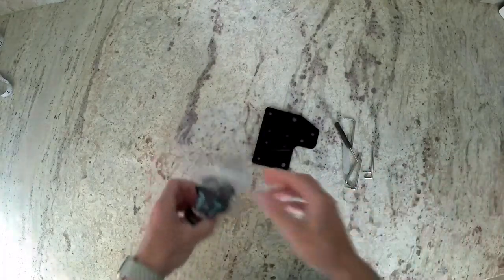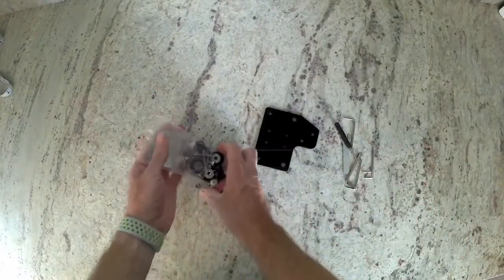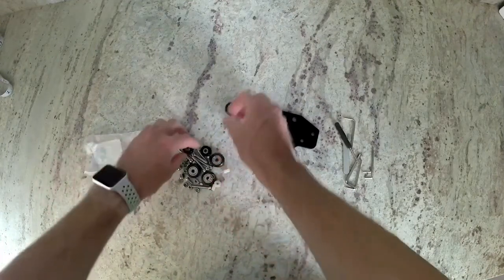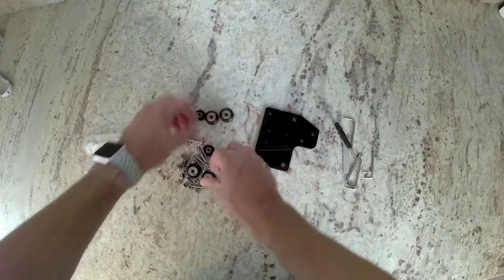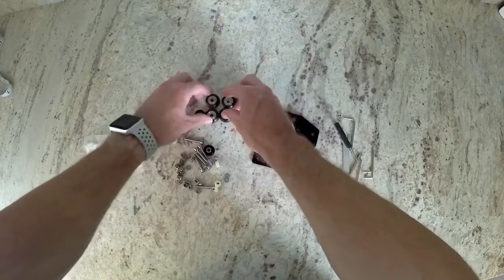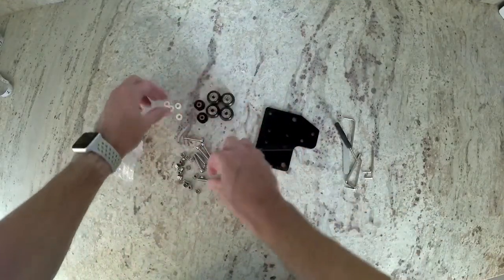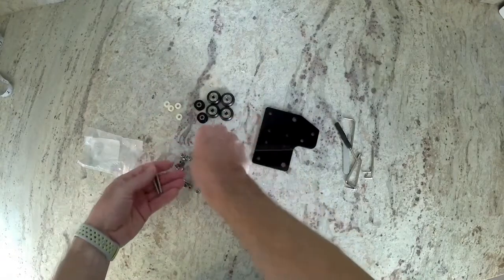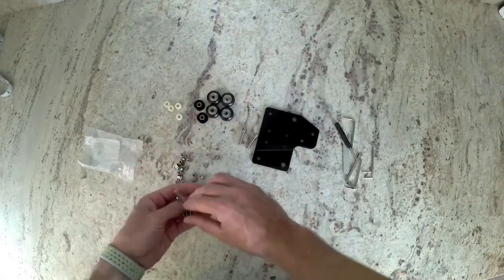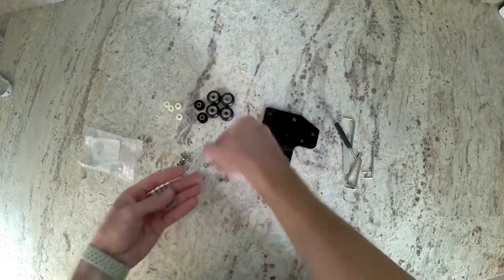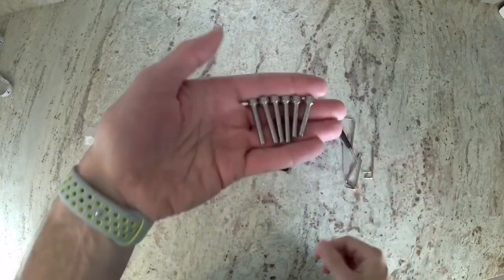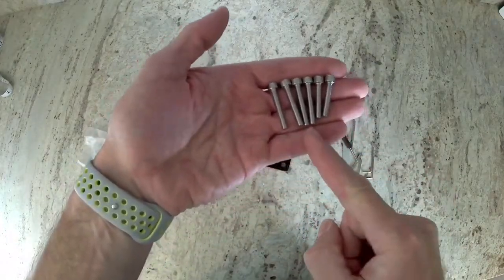Start by sorting out your hardware. I like to divide it all up. You are going to notice that in this packet there's actually two different sizes of these long bolts. There's going to be four of these longer bolts and two of the shorter bolts. So here's the four longer ones you can see, and the short ones.